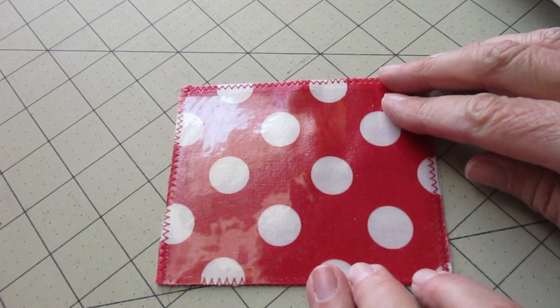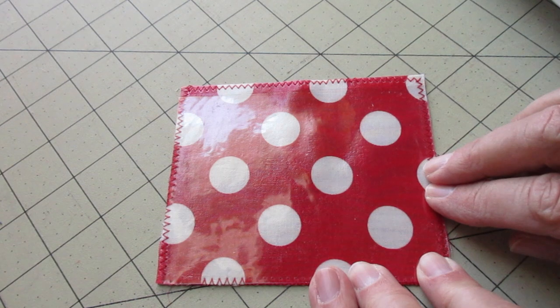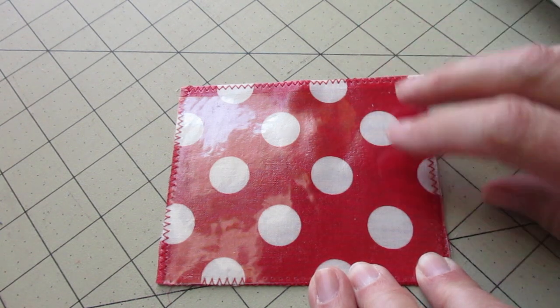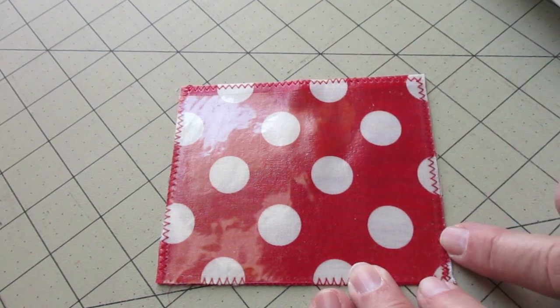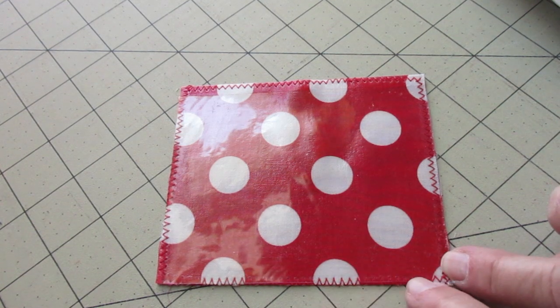Now grab your piece of vinyl. With the folded edge of your fabric at the top, place your vinyl at the bottom and align along the right edge, the left edge, and the bottom.